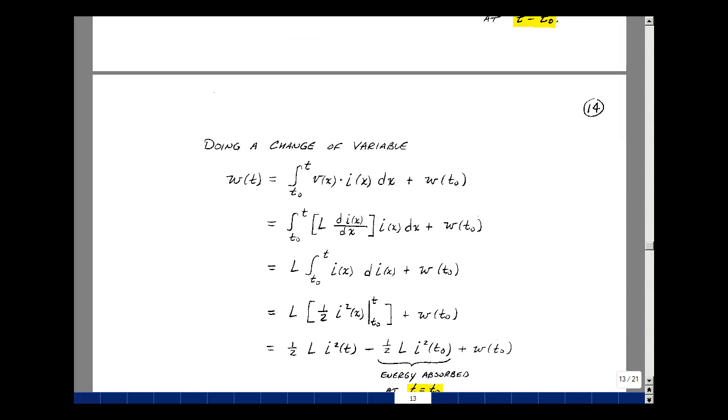We can do a change of variable so W of T equals the integral from T0 to T of V of x, I of x, dx plus the initial condition. What is the voltage across the inductance? It's L dI/dt. We're using a dummy variable x so we can substitute that in. The dx cancel. Pull out the L, it's just a constant.